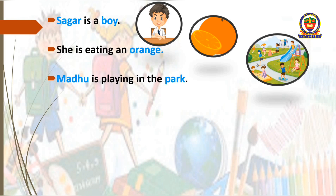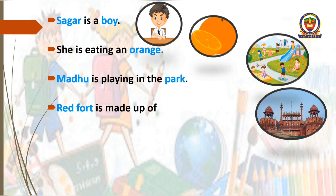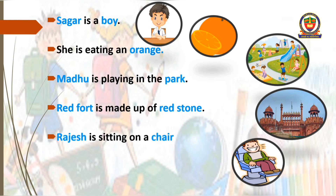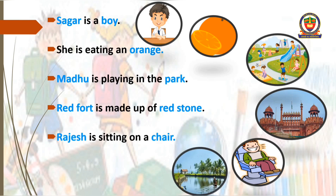Madhu is the name of a child and Park is the name of the place. Next sentence: Red Fort is made up of red stone. This sentence also has two nouns — Red Fort and Red Stone. Next sentence: Rajesh is sitting on a chair. In this sentence also we have two nouns — Rajesh and chair. And the last sentence is: Kerala is a beautiful state. So Kerala and state — both of these are nouns.